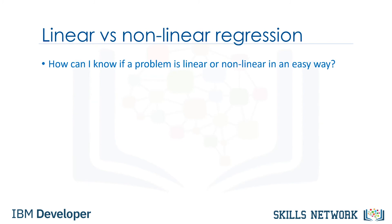Let me answer two important questions here. First, how can I know if a problem is linear or non-linear in an easy way? To answer this, we have to do two things. The first is to visually figure out if the relation is linear or non-linear — it's best to plot bivariate plots of output variables with each input variable. Also, you can calculate the correlation coefficient between independent and dependent variables, and if for all variables it is 0.7 or higher, there is a linear tendency, and thus it's not appropriate to fit a non-linear regression. The second thing is to use non-linear regression instead of linear regression when we cannot accurately model the relationship with linear parameters.